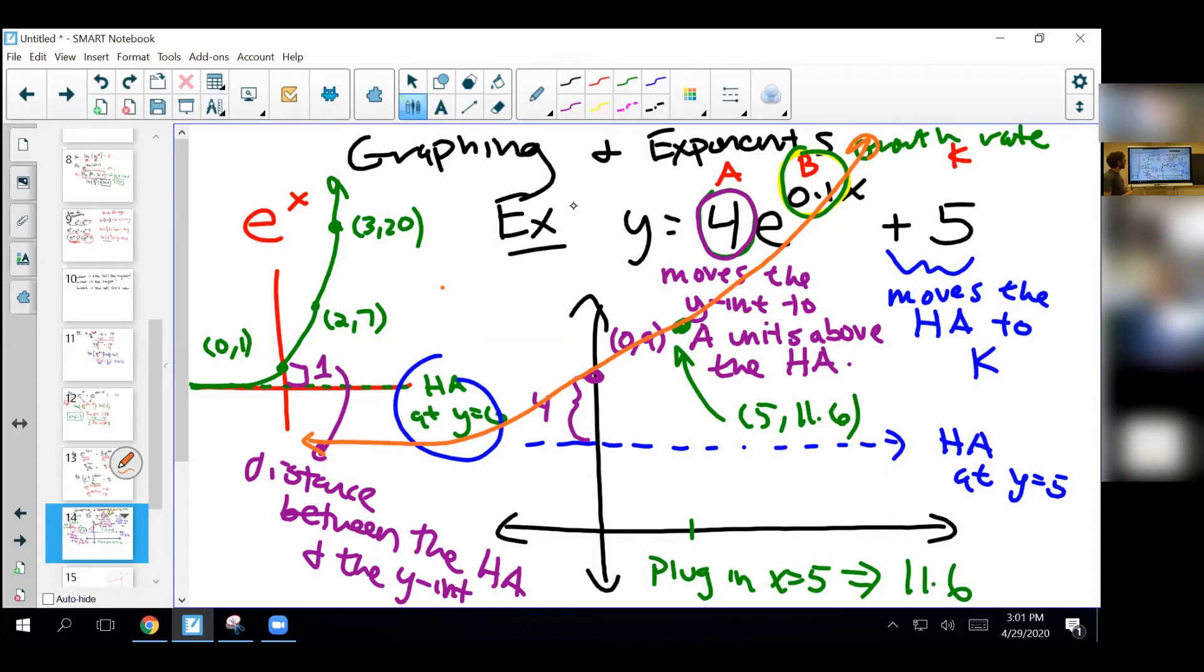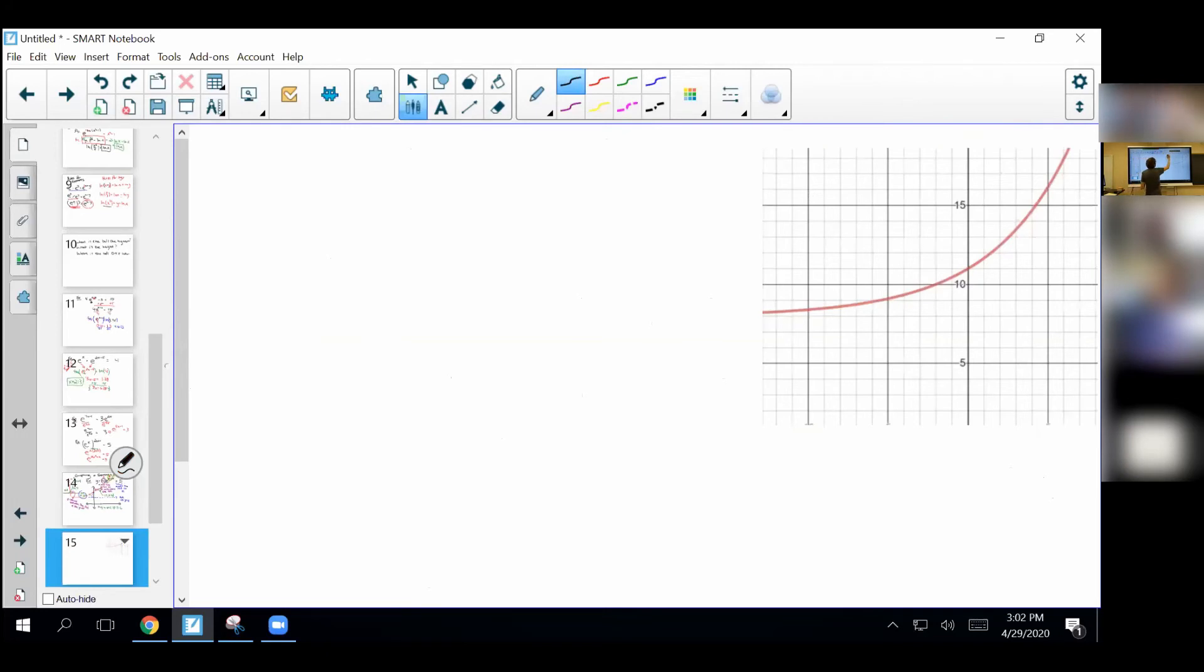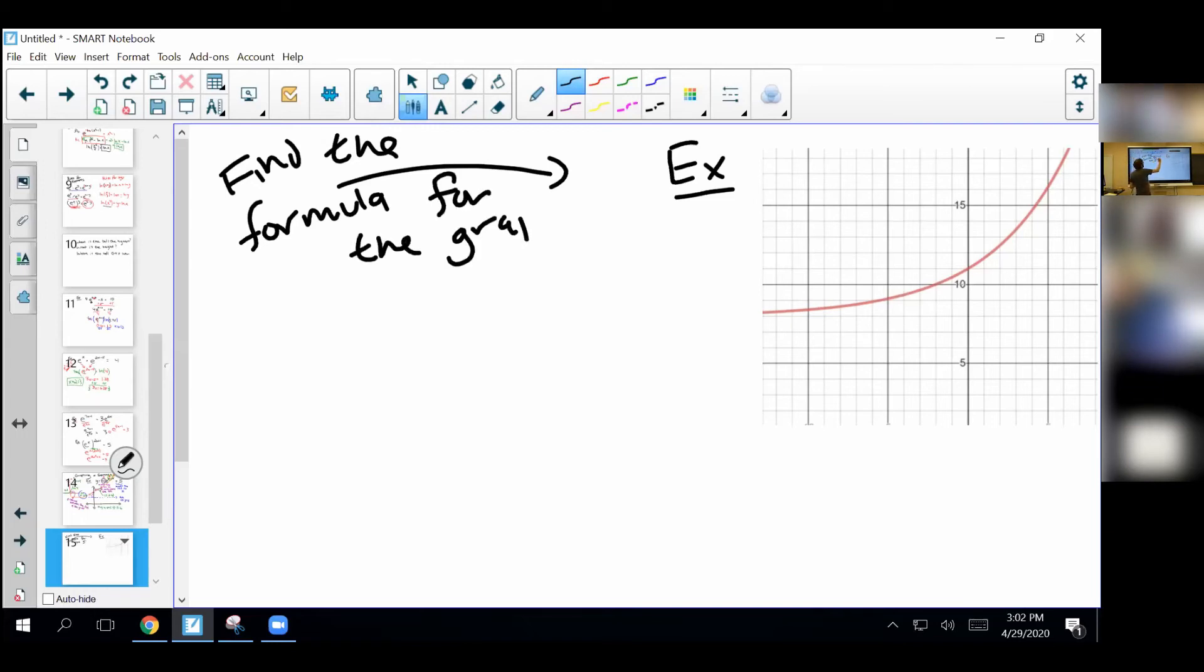So hopefully we can maybe do another example of this before the end of today but let me also show you the reverse process. So sometimes we have the graph and we want to figure out what the formula is. We've done problems like that with transformations before right. So let's do an example like that and you'll see we're just going to reverse this process. Actually I have an example right here. So I want to find this graph. We're done, we want to find the formula for the graph.